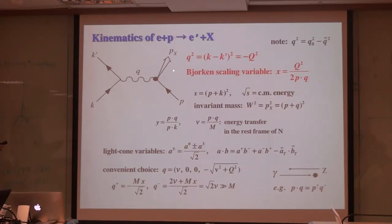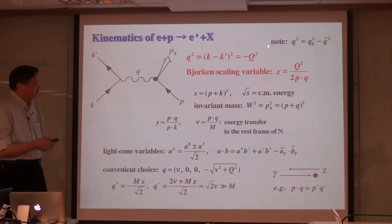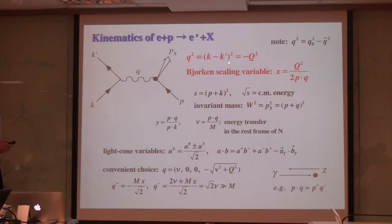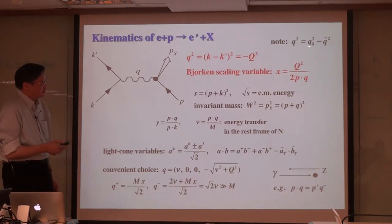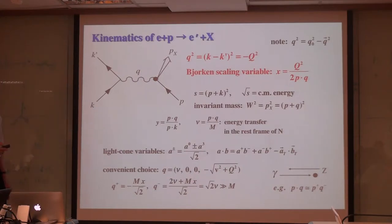Typically we do not observe these hadrons in so-called inclusive reactions. But in semi-inclusive reactions, fragmentation functions should be also discussed in detail. I just define the kinematical variables. There are two important variables that we use. The first is Q-square.